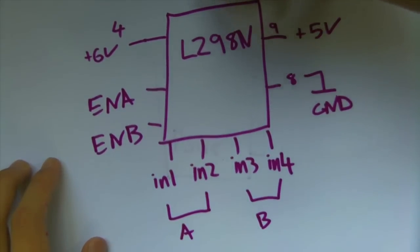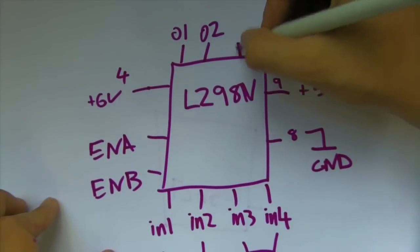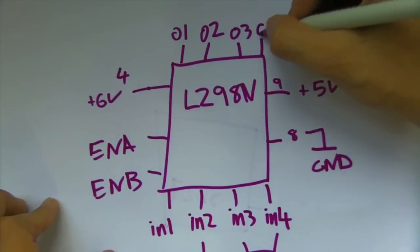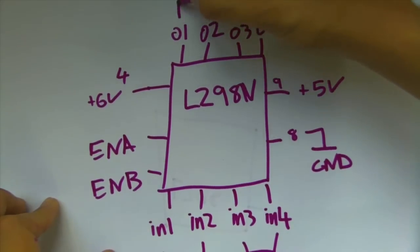And then, of course, you have your motor outputs. You have out 1, out 2, out 3 and out 4. So, we're just going to use 1 motor in this case. We'll use motor A. This controls motor B.